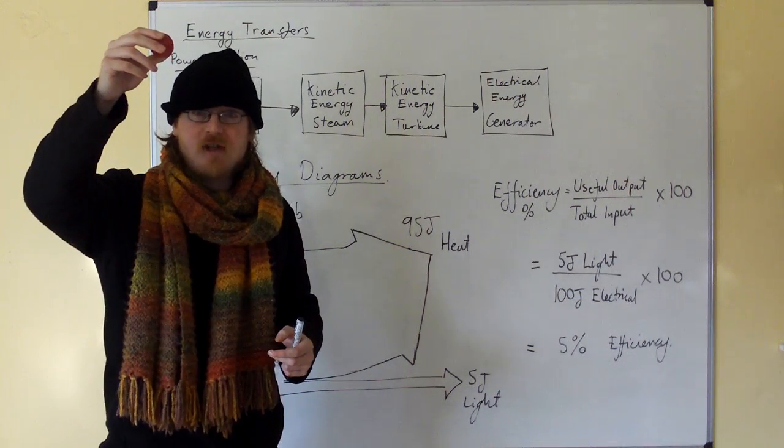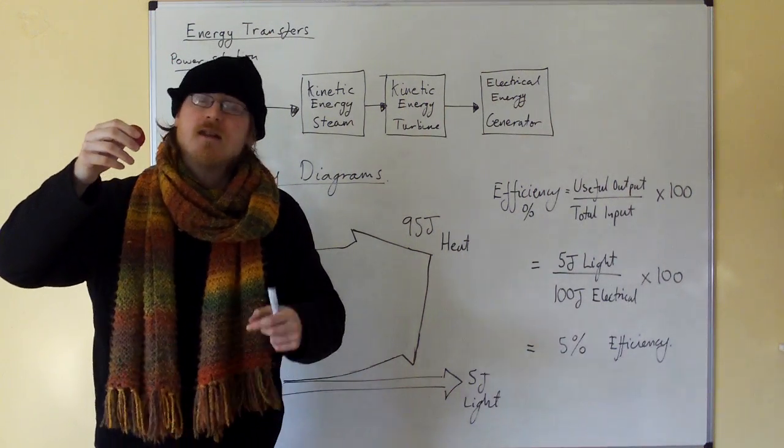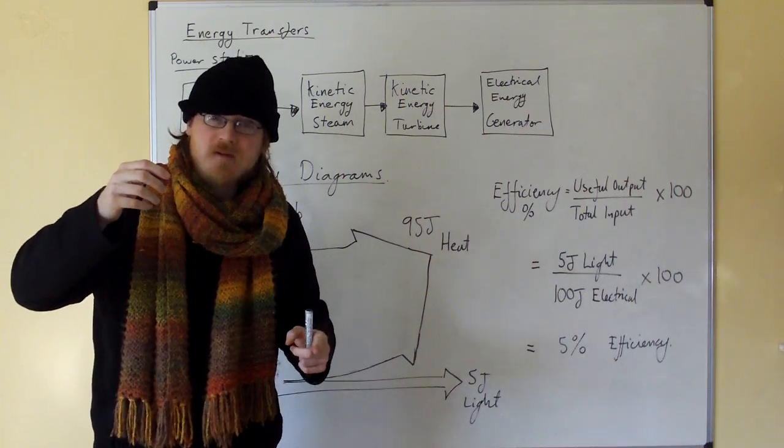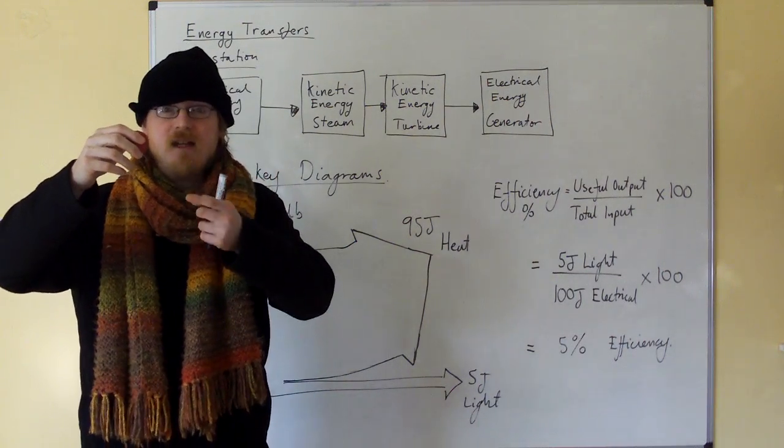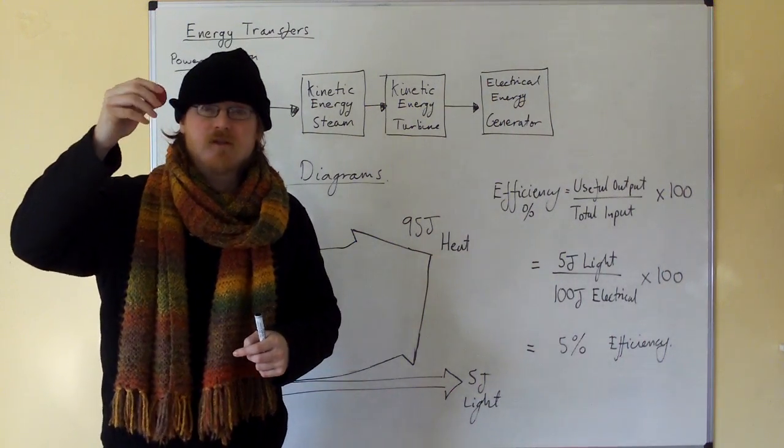So the cycle is: gravitational potential energy turns into kinetic energy, turns into elastic strain. Some of it is lost as sound and heat, then it's returned to kinetic energy, and then finally gravitational potential energy when it comes to the top of its bounce.